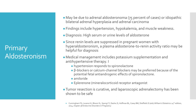Now let us discuss primary aldosteronism. This may be due to adrenal aldosteronoma, or in 75% of cases, idiopathic bilateral adrenal hyperplasia and adrenal carcinoma. The findings include hypertension, hypokalemia, and muscle weakness. The diagnosis is established by high serum or urine levels of aldosterone. Since renin levels are suppressed in pregnant women with hyperaldosteronism, a plasma aldosterone to renin activity ratio may be helpful for diagnosis. Medical management includes potassium supplementation and antihypertensive therapy. Hypertension responds to spironolactone, though beta blockers or calcium channel blockers may be preferred because of the potential fetal androgenic effects of spironolactone. Amiloride and eplerenone also can be used. Tumor resection is curative and laparoscopic adrenalectomy has been shown to be safe.